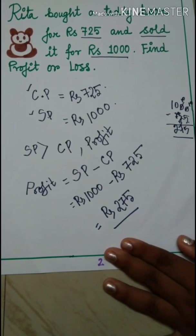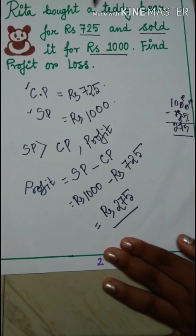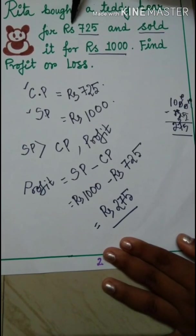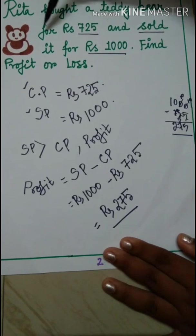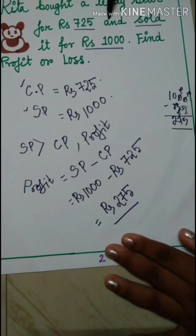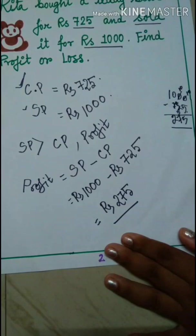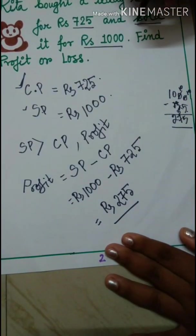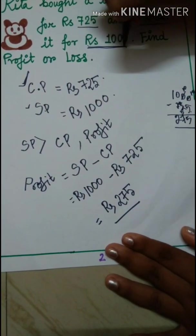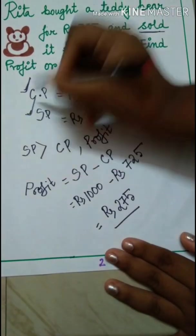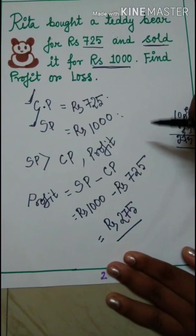Have you understood it? One more time I am telling you. Rita bought a teddy bear for Rs 725. That means Rs 725 is cost price of Rita. And Rita sold the teddy bear for Rs 1000. That means Rs 1000 is the selling price of the teddy bear.